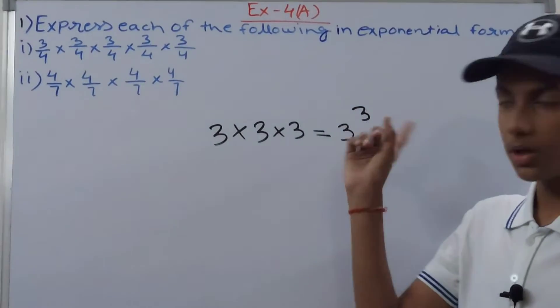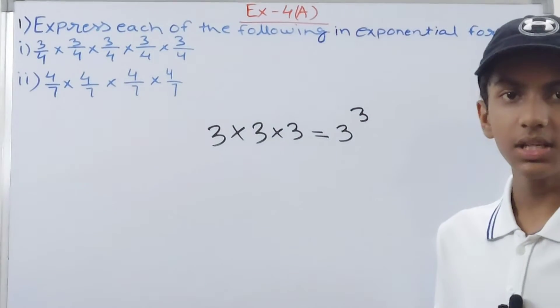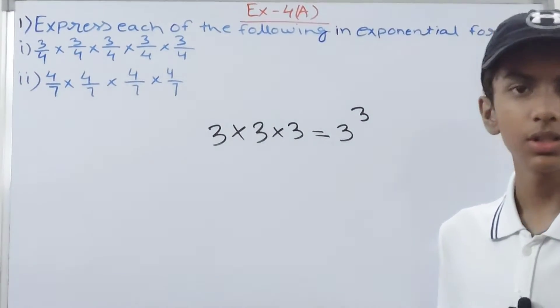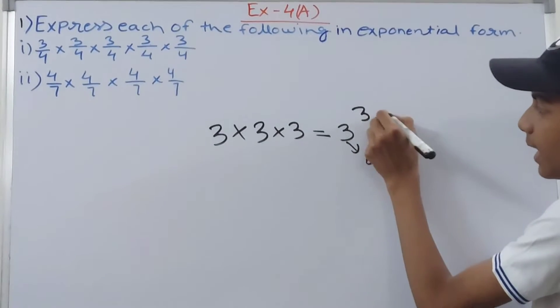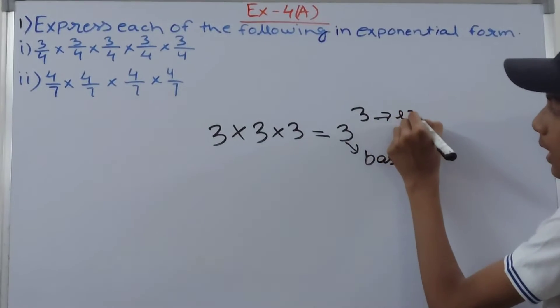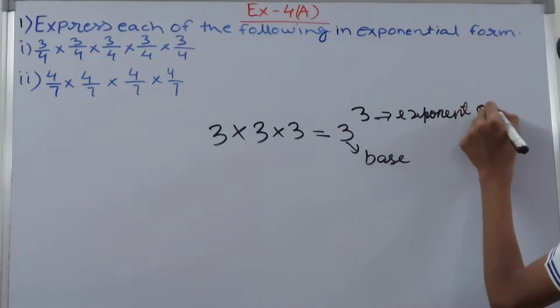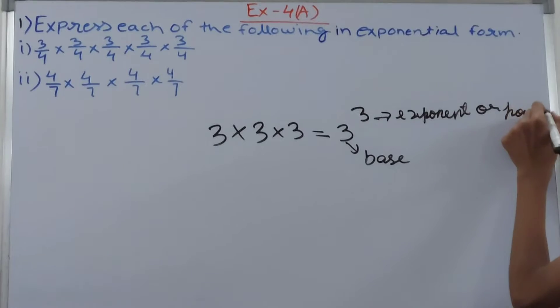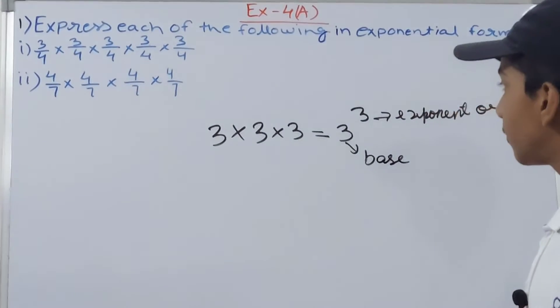Above it I can write 3 again. What does this 3 indicate? It indicates that the base, which is 3, is being multiplied how many times? Three times. So this is our base and this is what we call exponent, or you can call it power as well. There is one more word, index.